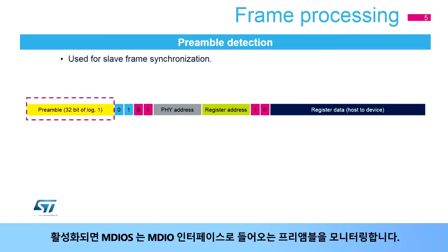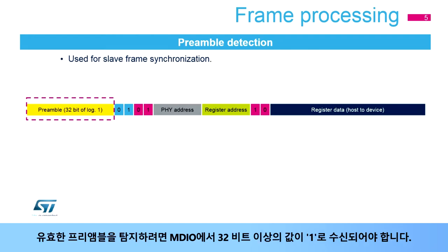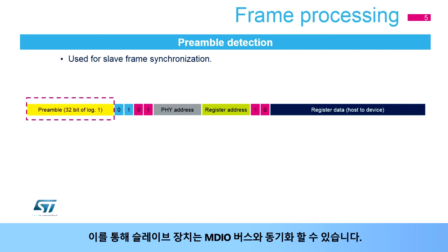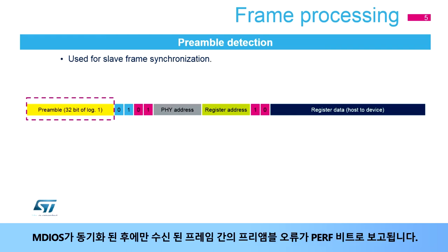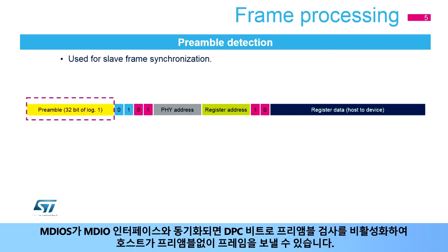When enabled, the MDIO-S monitors the MDIO interface for an incoming preamble. At least 32 bits on MDIO shall be received with value 1 to detect a valid preamble. This allows the slave device to synchronize with the MDIO bus. Once synchronized, the 32-bit preamble is required after any received frame. Only after the MDIO-S is synchronized, preamble errors between received frames are reported by the PERF bit. Once synchronized with the MDIO interface, the preamble check can be disabled by the DPC bit, allowing the host to send frames without preamble.